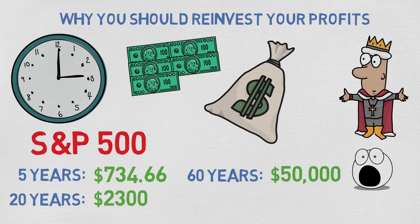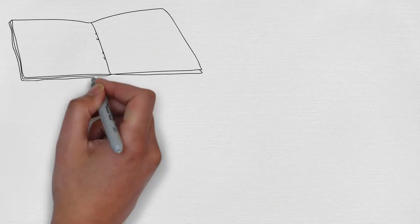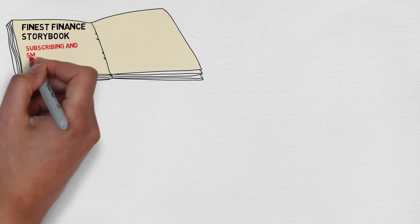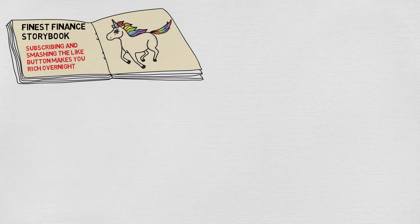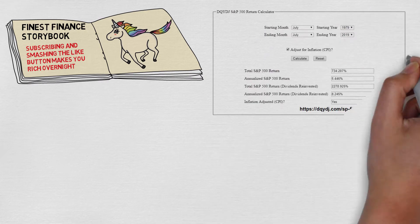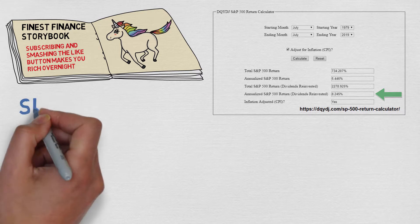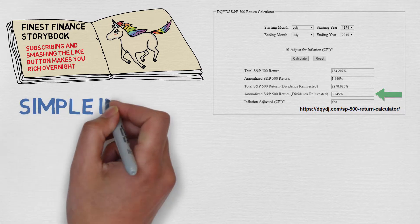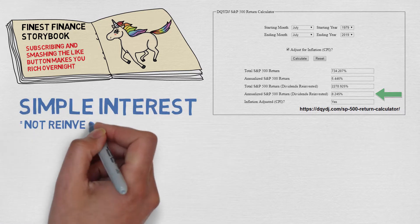So how does this happen? The reason is compound interest. All the examples I am about to show are not made up — I am using the past 40 years of the S&P 500 for the average annual return on investment. But before we get into compound interest, let's first show an example of simple interest, which means that you are not reinvesting your profits.